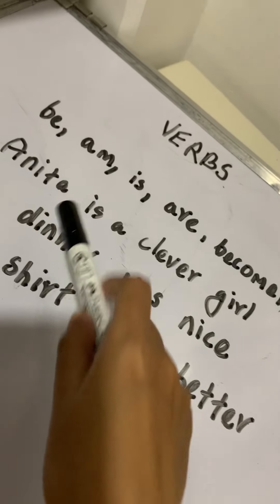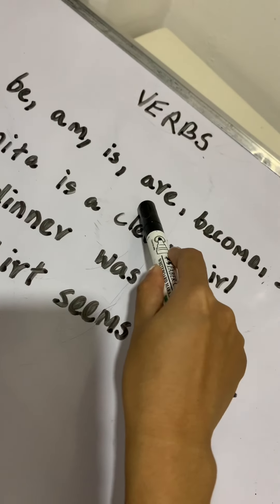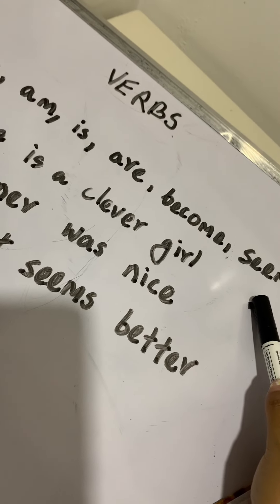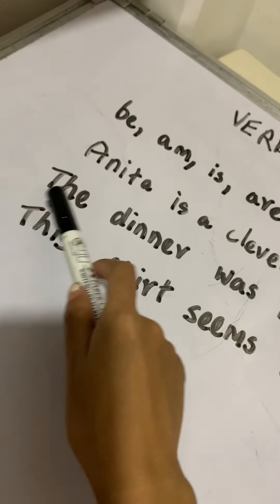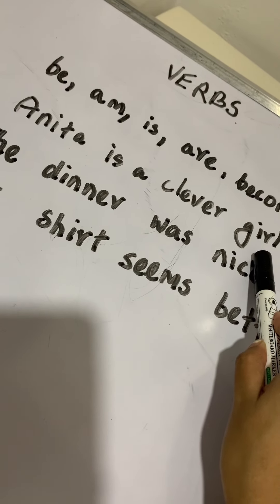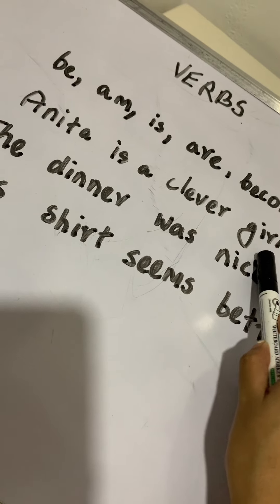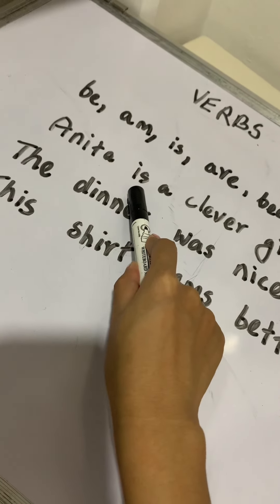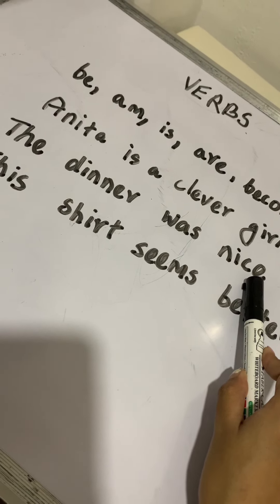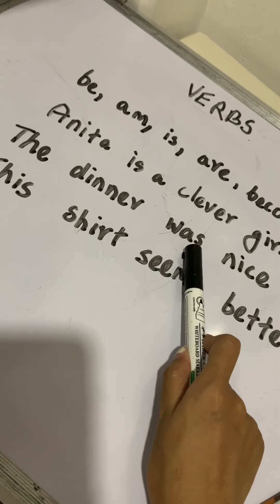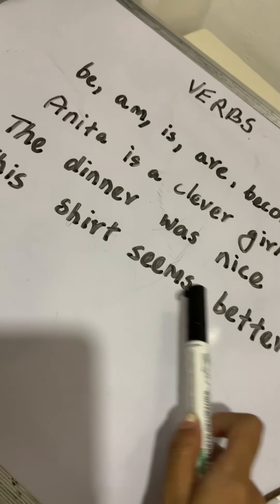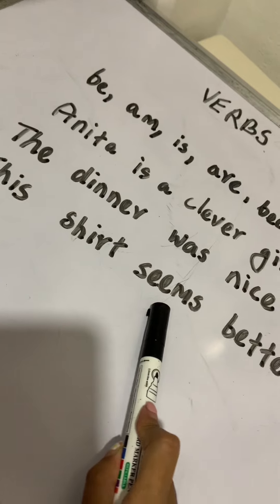A few verbs like be, am, is, are, become, seem, etc. say what somebody or something is. For example: Anita is a clever girl — the verb is is. The dinner was nice — the verb is was. This shirt seems better — the verb is seems.